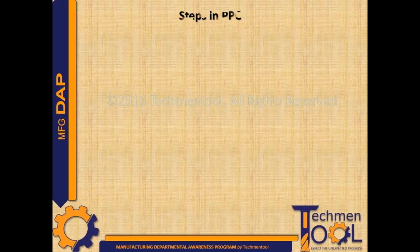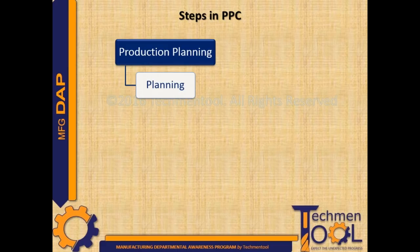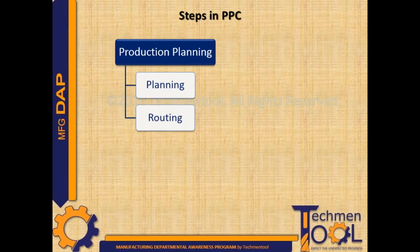In production planning, there are four steps: planning, routing, scheduling, and loading. Planning is the process of deciding in advance what is to be done, each step to be taken at the right time and in the right place, and each operation to be performed at maximum efficiency. Routing is the process of determining the exact path which will be followed in production.